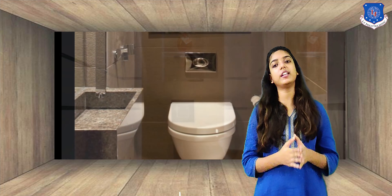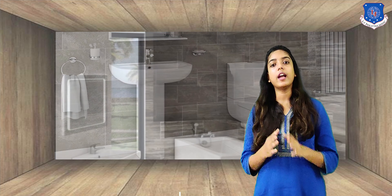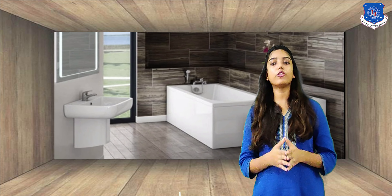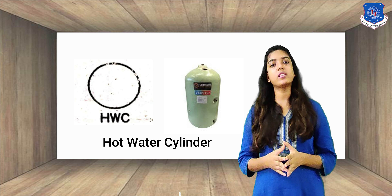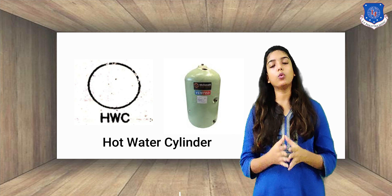Now we will see symbols for sanitary and water supply installations. As you can see on the screen, there are multiple types of sanitary and plumbing fittings available in the market, and each one of them has a specific use as per the drawing requirements or site requirements.